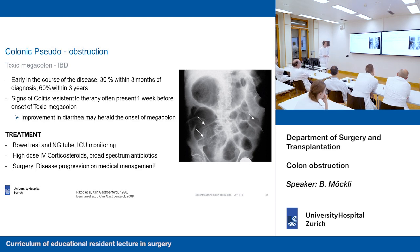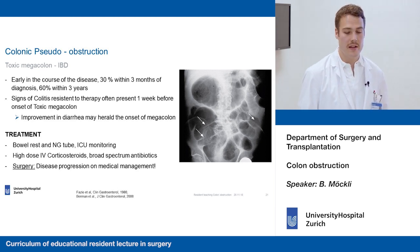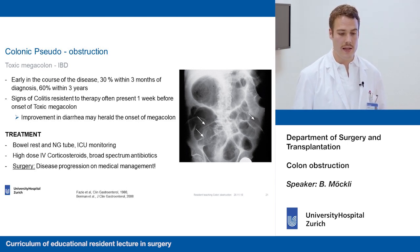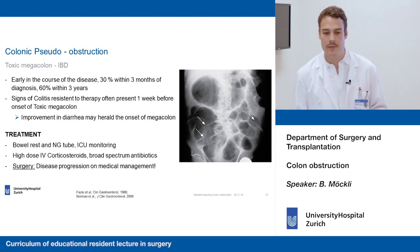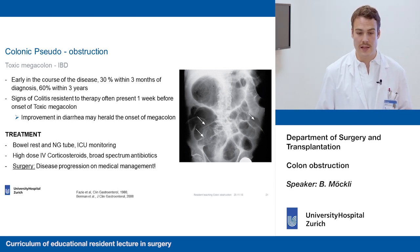On imaging you can see a diffusely dilated proximal colon with haustra markings that do not extend over the whole colon, which is very typical for toxic megacolon. Abdominal radiographs are critical for follow-up as they are easy to perform. Treatment is straightforward: these patients are often very ill and need bowel rest, an NG tube, often ICU monitoring. High-dose IV corticosteroids can be given — studies have shown there is no increased risk of perforation with this. Broad-spectrum antibiotics are also given.